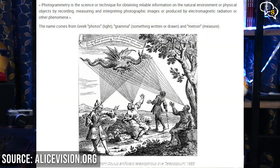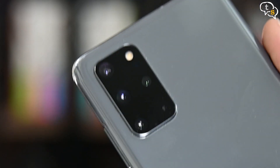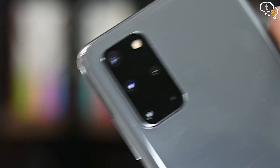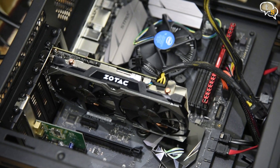Photogrammetry is not a new technology in any way, and it appeared in the middle of the 19th century, almost simultaneously with the appearance of photography itself. With digital photography becoming more accessible to everyone, photogrammetry just needed a camera — which could also be a mobile camera — and you would also need a moderately powerful PC.